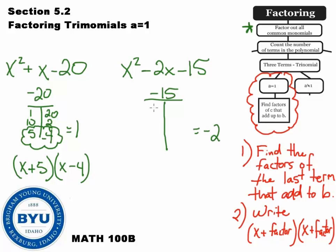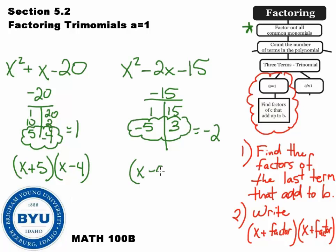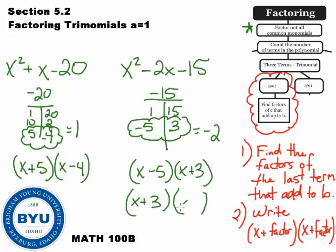Now let's try negative 15. Factors of 15: there's 1 and 15 — that won't add to negative 2. Then 5 and 3. I think I could get 5 and 3 to add to negative 2 if I make the 5 negative. Negative 5 plus 3 is negative 2. So the answer is x minus 5 and x plus 3. Some people ask if the order matters — can you switch them? You can. x plus 3 and x minus 5 means the exact same thing.